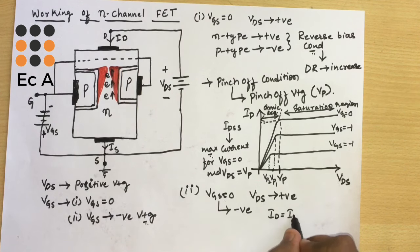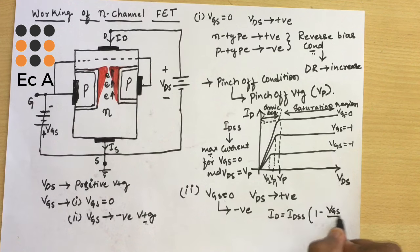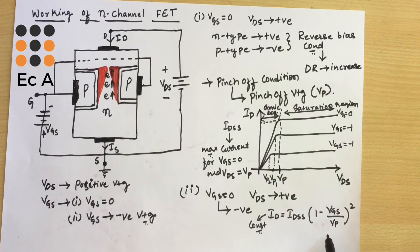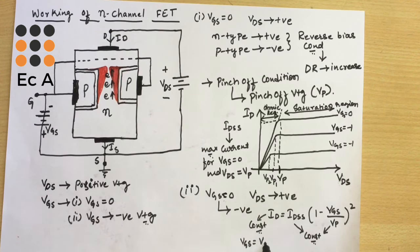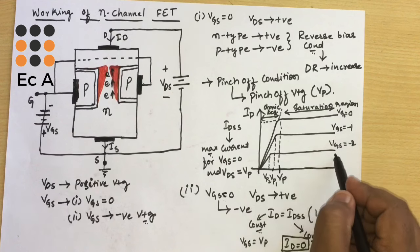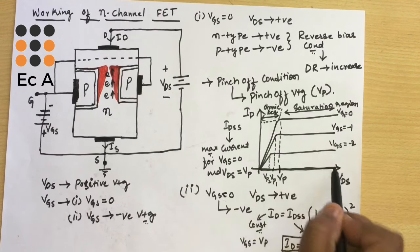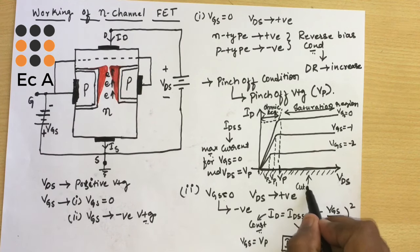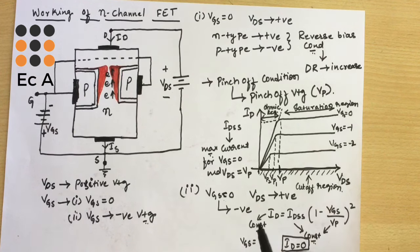The relation between VGS and ID can be written as: ID = IDSS × (1 − VGS/VP)². Here IDSS and VP are both constants, and we vary VGS. If VGS is made equal to VP, then ID becomes zero. As we keep decreasing VGS to equal VP, we get ID equal to zero — the region where the FET is not conducting is called the cutoff region.